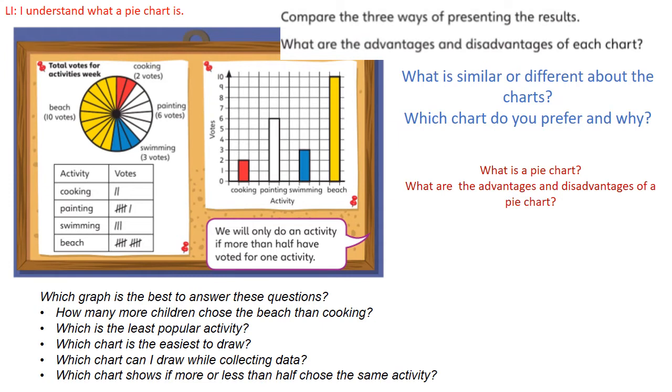So this time the question is asking you to compare the three ways of representing the results. What are the advantages and disadvantages of each chart? So I've got some questions down for you at the bottom. How many more children chose the beach than the cooking? Which chart shows us that the easiest? They all do show us it, but which one is the easiest to see?